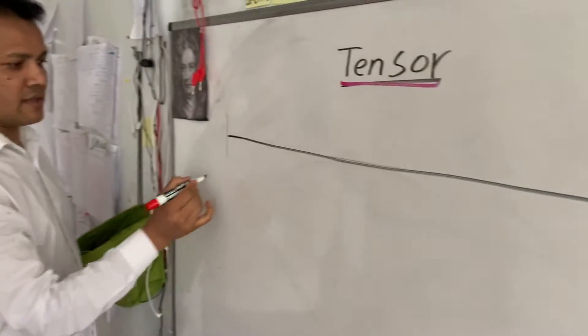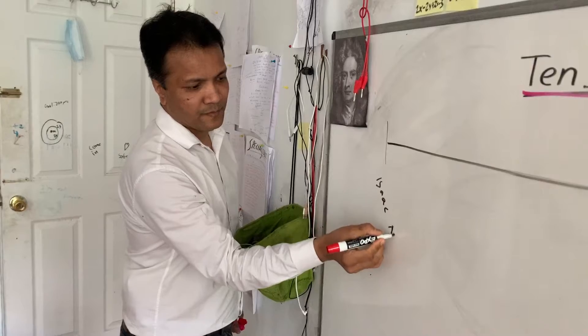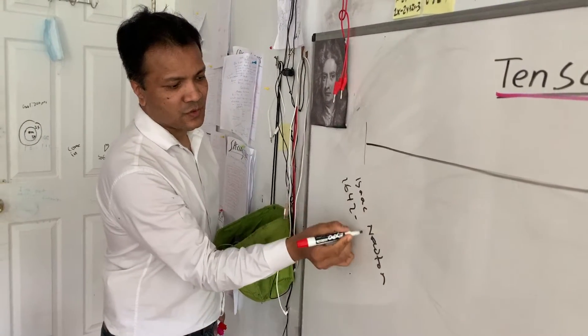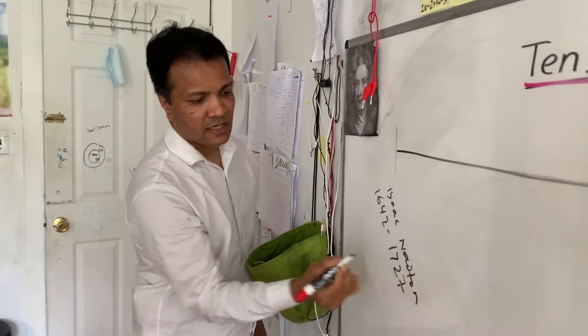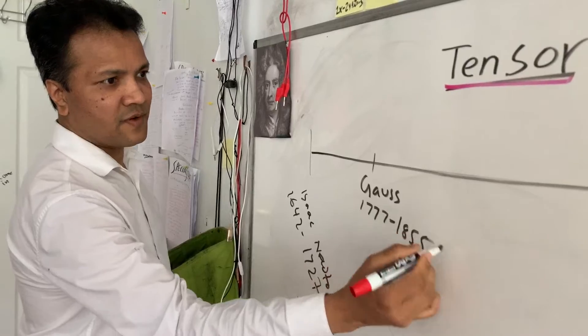So this is the timeline. As I said, it starts with Isaac Newton. Isaac Newton was born 1642 and he lived a long life. And then it takes us to Gauss, 1855.